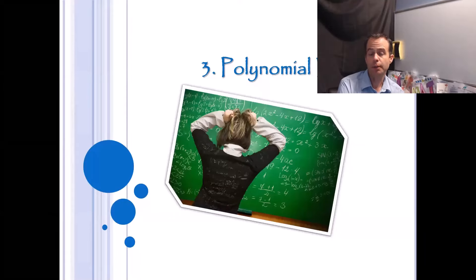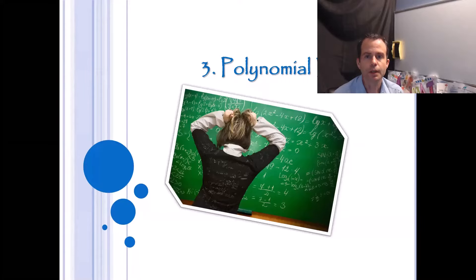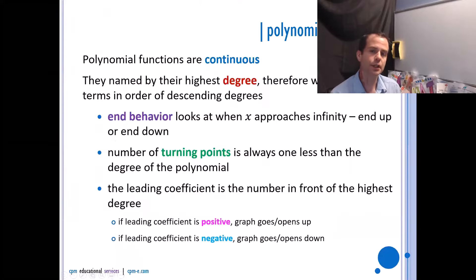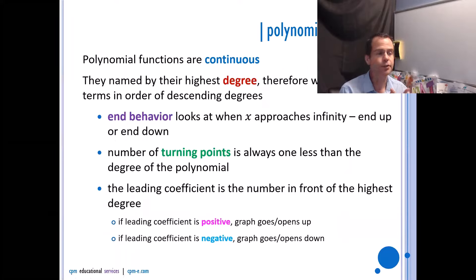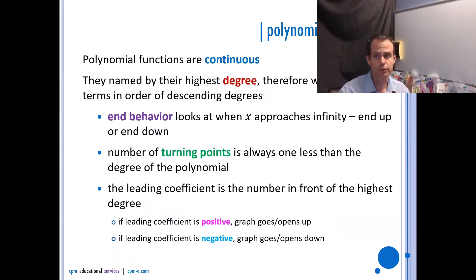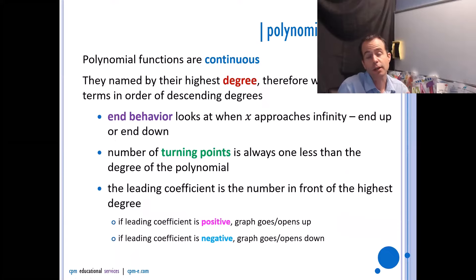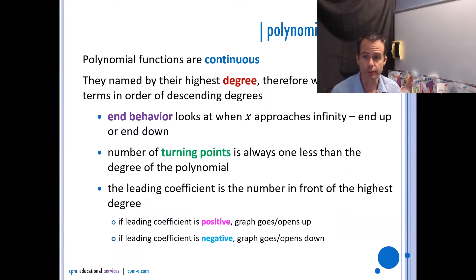The next section we're going to talk about is polynomial functions. Some things I need you to be comfortable with: polynomial functions are continuous. That means I can draw the whole thing without lifting my pencil, so there are no asymptotes, no points of discontinuity, nothing like that. For polynomials, the domain will always be a member of the reals.